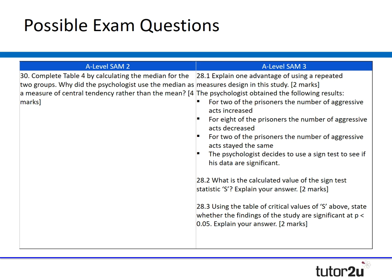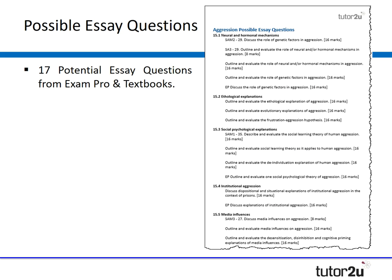There is also the chance for examiners to embed research methods into the aggression topic, so watch out for potential research methods questions. I've compiled on one document the 17 potential essay questions that could come up, taken from ExamPro, textbooks, and sample assessment material. Watch out especially for social psychological explanations and neural and hormonal mechanisms, as those areas have more potential questions — covering genetic versus neural, and social learning theory versus de-individuation.